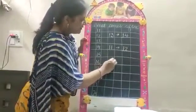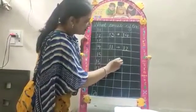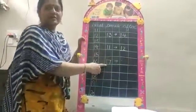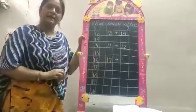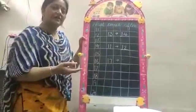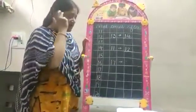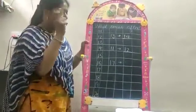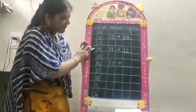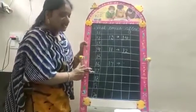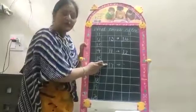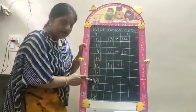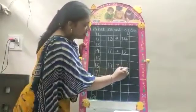Here we are writing the number 17. What will be the next number after 17? So just read the counting in your mind: 11, 12, 13, 14, 15, 16, 17, 18. What will be the next number after 17? There is 18. So the next number is 18.